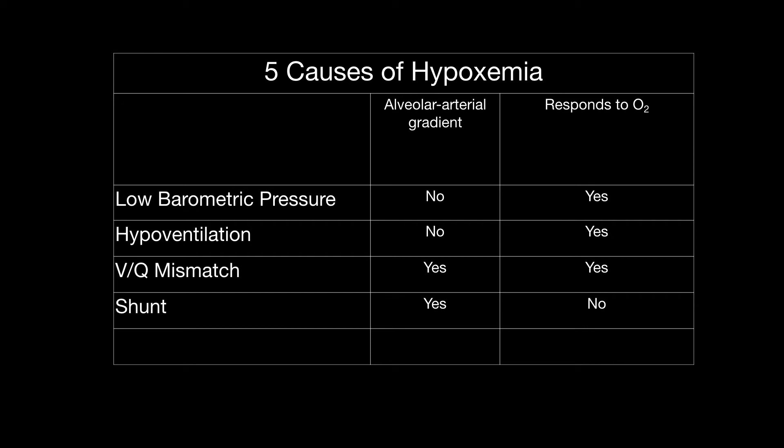The fifth cause of hypoxemia is diffusion abnormality, and it actually looks quite a bit like VQ mismatch — there's an AA gradient, and it responds to oxygen. The problem here isn't a discrepancy between ventilation and perfusion, but a problem at the alveolar-capillary unit itself, where one of the linings — either the alveolar lining or the capillary lining — is too thick, so diffusion across the membrane is decreased. You can improve diffusion by increasing the gradient by giving more oxygen.